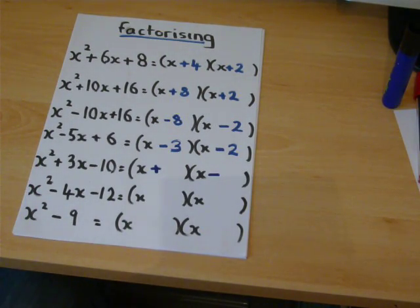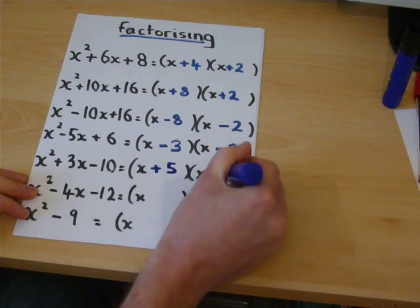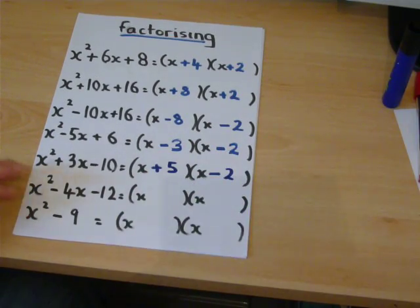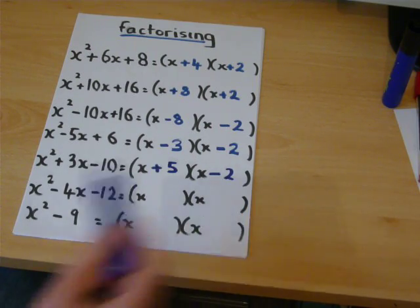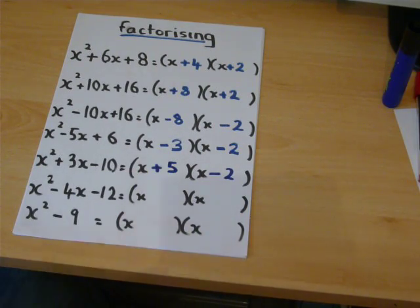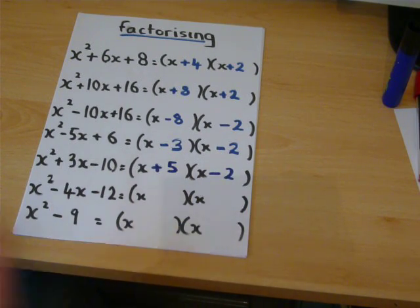So, two numbers times to make ten. So, if I put a plus five and a minus two in, then plus five times minus two is indeed minus ten, but five take away two is three.